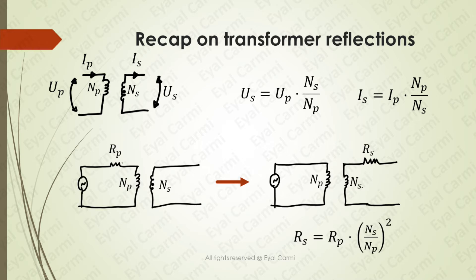If you want to reflect resistance from the primary side to the secondary side, take the resistance in the primary side and multiply it by N secondary divided by N primary, squared. It is similar to voltage reflection, but the ratio is squared. Keep in mind that ideal transformer apparent power S is equal in both sides.